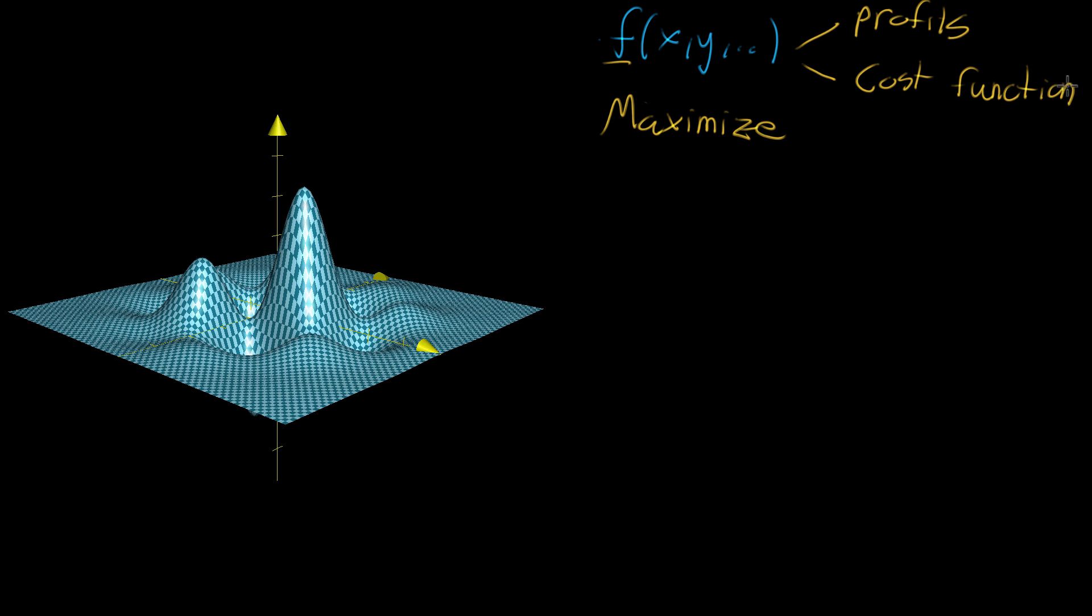Maybe you're trying to teach a computer how to understand audio or how to read handwritten text. You find a function that basically tells it how wrong it is when it makes a guess. If you do a good job designing that function, you just need to tell the computer to minimize it, so that's kind of the flip side. If it minimizes this cost function, that means it's doing a really good job at whatever task you've assigned it.